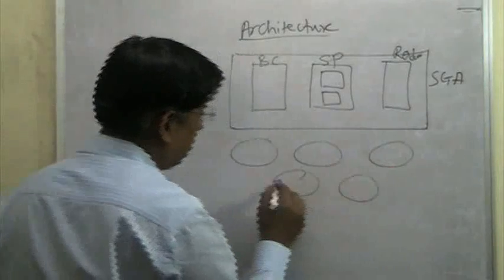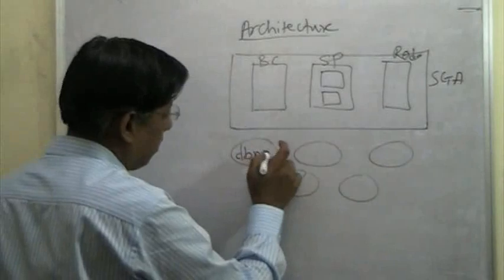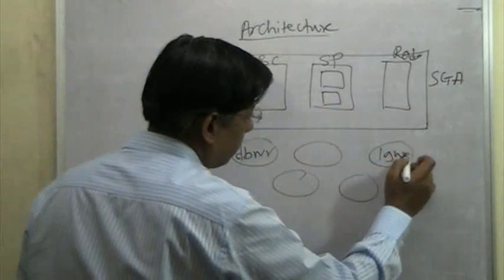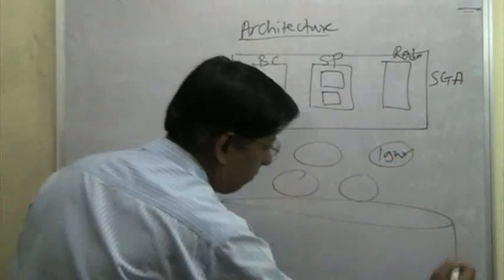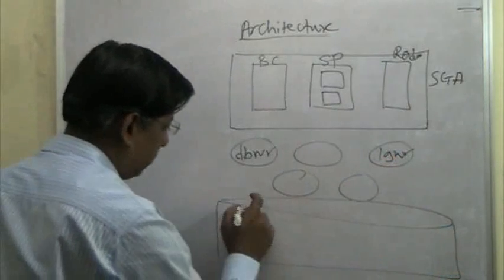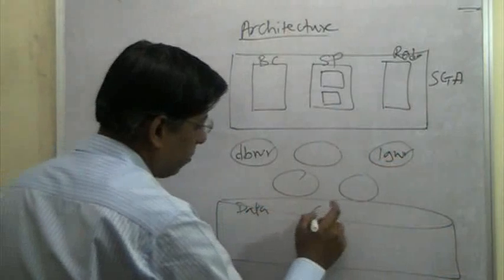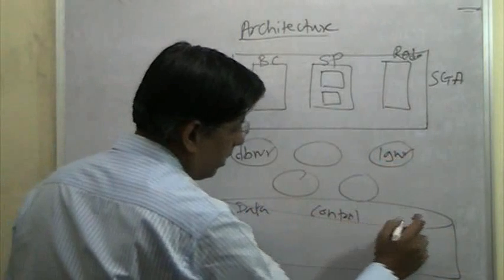We have seen only the DBWR and LGWR so far. And then on the disk, we have data files, control files, and so data, control, and redo files.